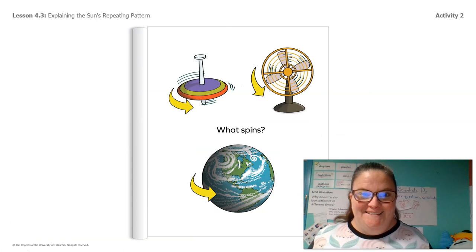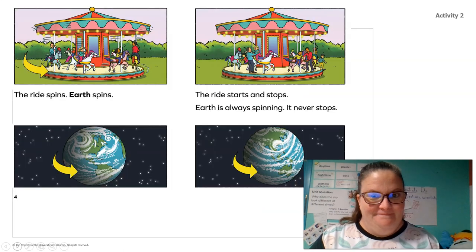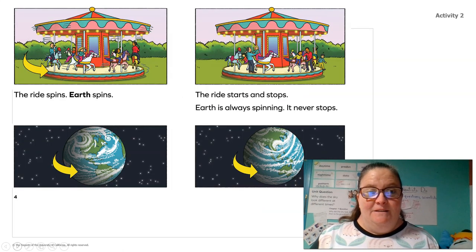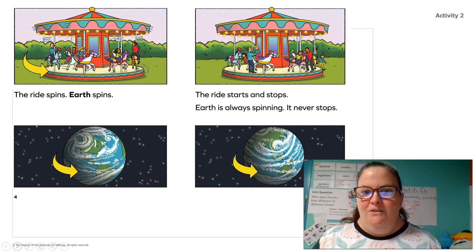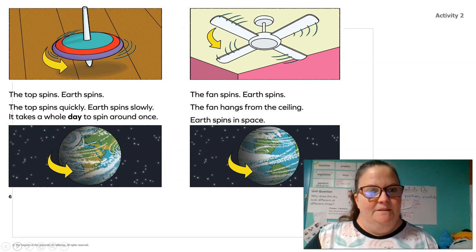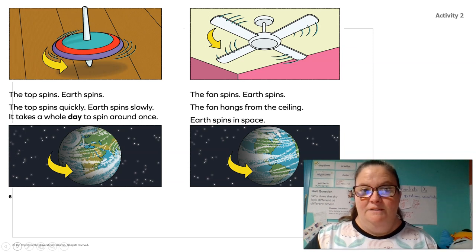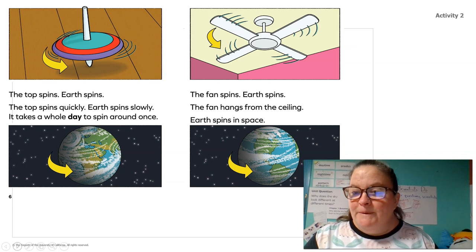It's reading time, so Ms. Ward needs her glasses. "What Spins? The ride spins. Earth spins. The ride starts and stops. Earth is always spinning — it never stops. The top spins. Earth spins. Earth spins slowly. It takes a whole day to spin around once. The fan spins. Earth spins. The fan hangs from the ceiling. Earth spins in space."